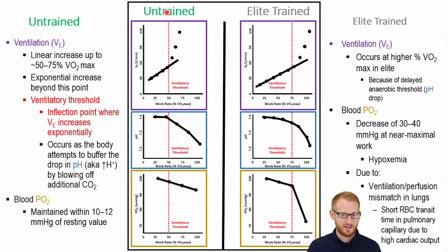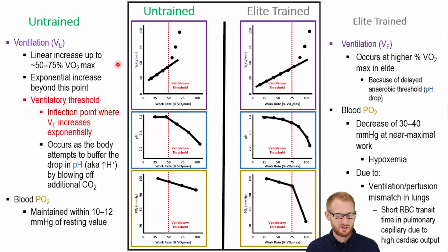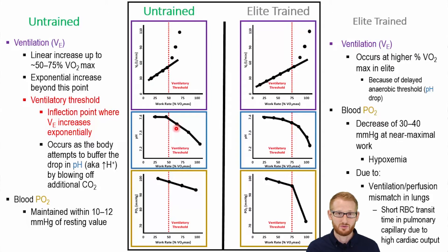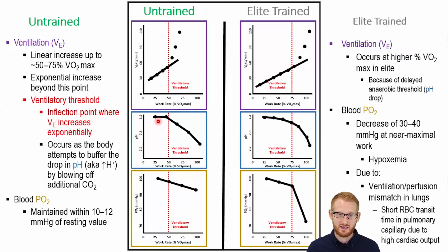Looking at ventilation for an untrained person versus an elite trained individual — by elite we mean a world-class level marathon runner. The untrained individual is going to increase their ventilation immediately, but somewhere around 50 to 75 percent of maximum they hit the ventilatory threshold, which happens at the same time as the lactate threshold because the lactate threshold actually causes it. You see this big increase in ventilation that stops being the linear increase seen before that point.